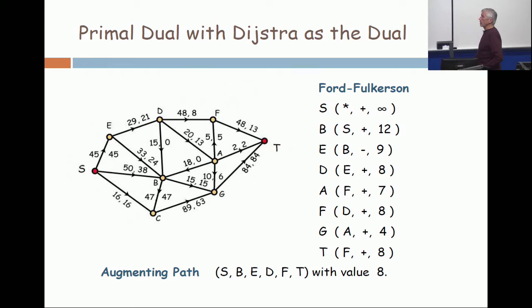I start by labeling the source with the triple star plus infinity. That's the default initialization. Now I scan from S in the order of the pseudo-alphabetic ordering. So I first look at T. Is there an edge from S to T? No. Move on. Is there an edge from S to A? No. Move on. Is there an edge linking S and B? Yes. Is that edge forward or backwards? Forward. Is it full? No. Label B. It gets its label from S, moving in a positive direction with spare capacity 12. Does everybody see and understand that second line? Because if you're stuck here, it'll only get worse.